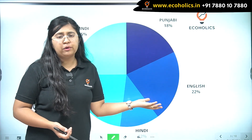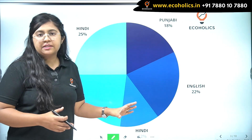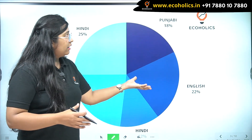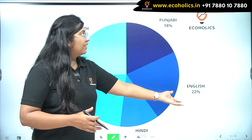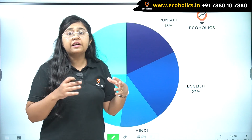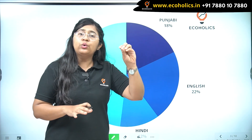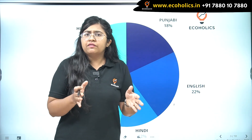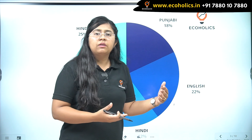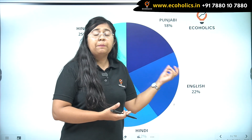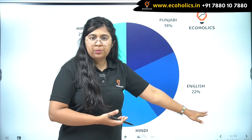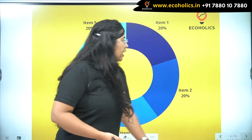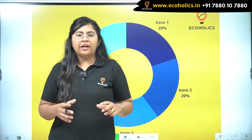Here is a simple example of a pie chart. There are different subjects or languages — English, Punjabi, Hindi, and Economics — represented with different percentages. For example, English has been given 22 percent, meaning 22 percent of the sampled population speaks or learns English. This is how pie charts represent different categories with their respective percentages.